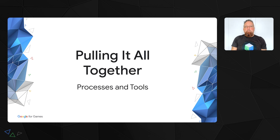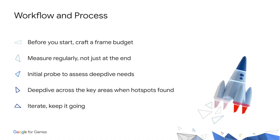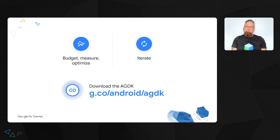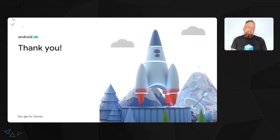Now pulling it all together with the five areas and tools covered — what have we learned? Craft a performance budget; it's important to have a hard goal to measure against. Just hitting 60 Hz is a poor budget goal. Measure regularly with your tools of choice across these five areas and others as required. Perform the initial probe across your performance areas, deep dive where you have issues, and iterate regularly. Download the AGDK, build great games, optimize. The key is to understand what your target frame budget is ahead of time and measure regularly. Use the tools across the areas, assess, and dig in.